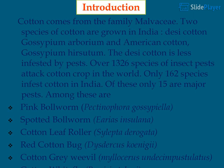Cotton comes from the family Malvaceae. Two species of cotton are grown in India: Desi Cotton, Gossypium arboreum, and American Cotton, Gossypium hirsutum. The Desi Cotton is less infested by pests. Over 1,326 species of insect pests attack cotton crop in the world. Only 162 species infest cotton in India, of which only 15 are major pests.